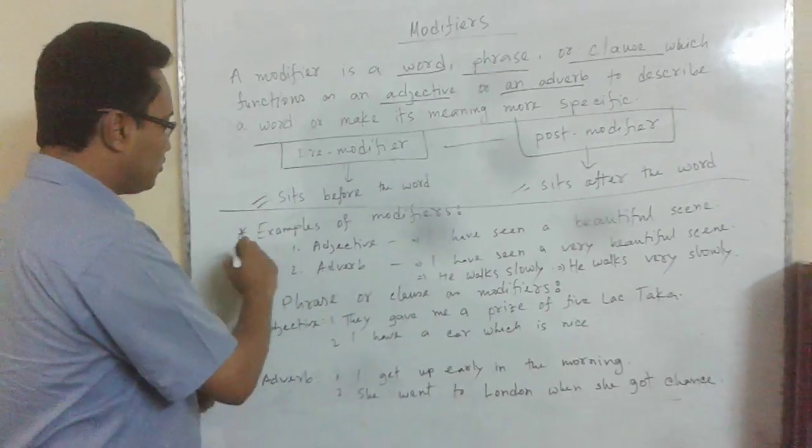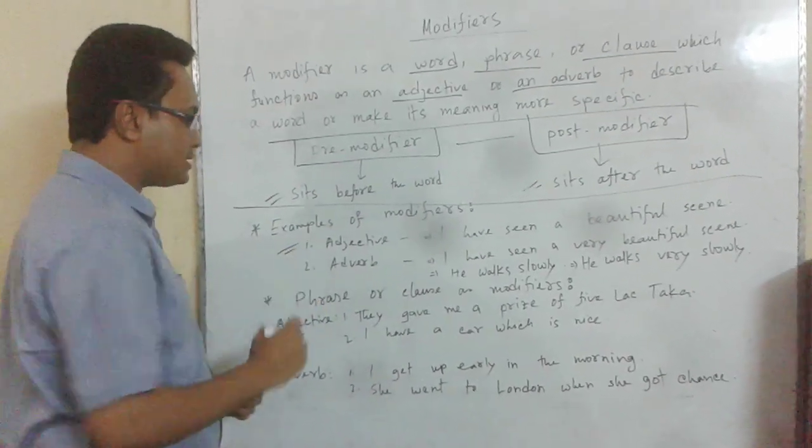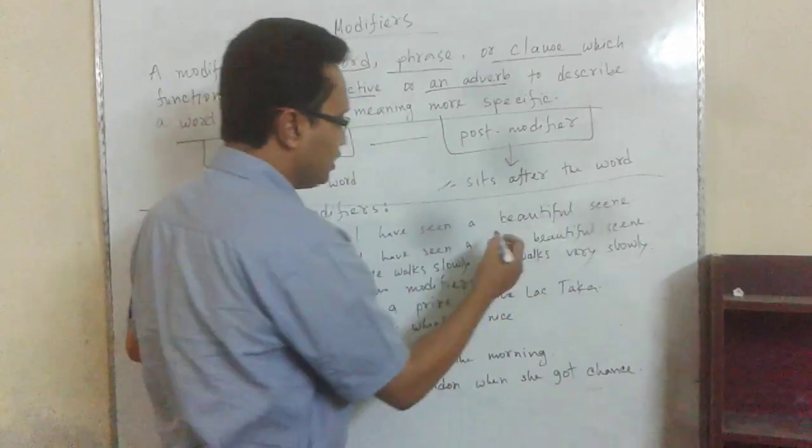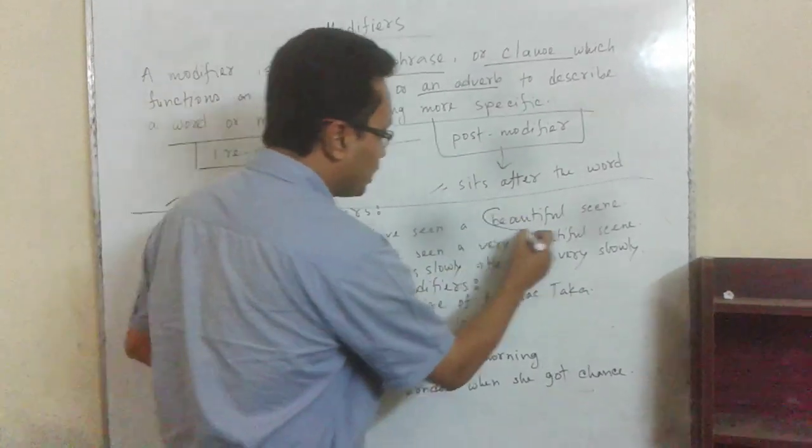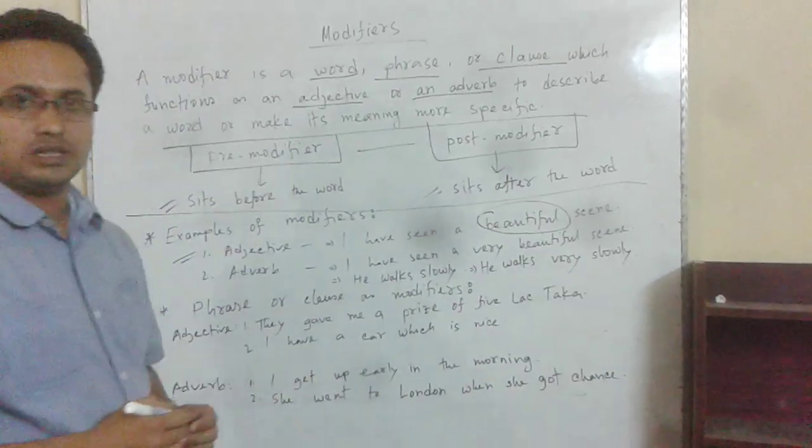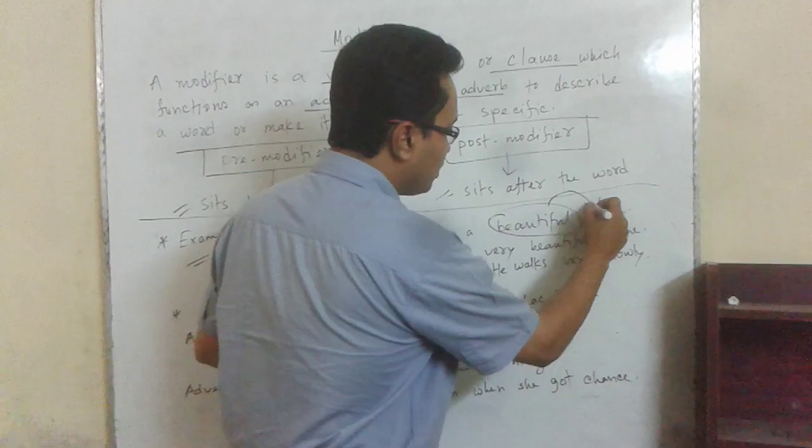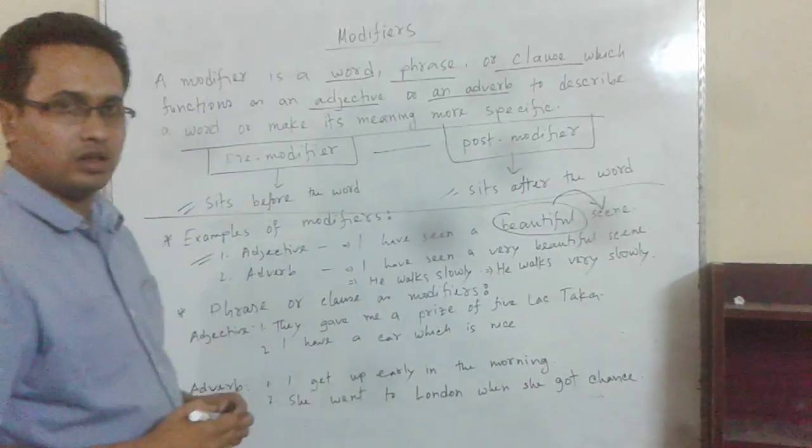Examples of modifiers. First of all, as adjective: I have seen a beautiful scene. Here, the word beautiful is adjective and it modifies the noun scene.